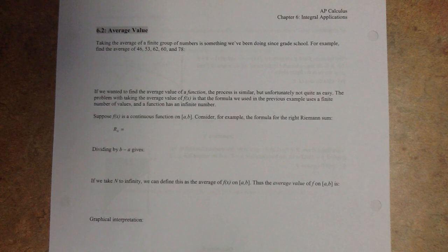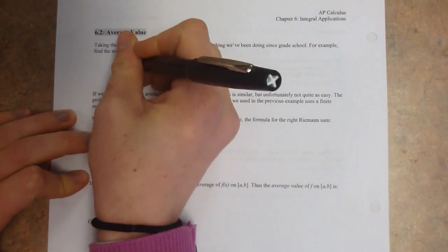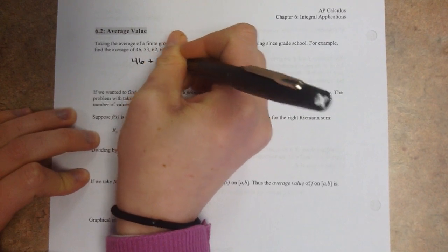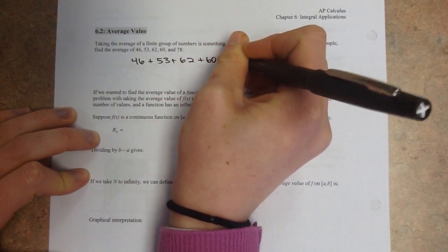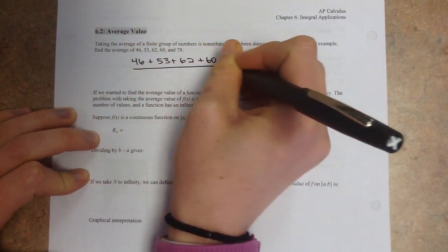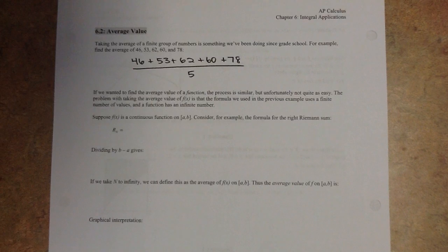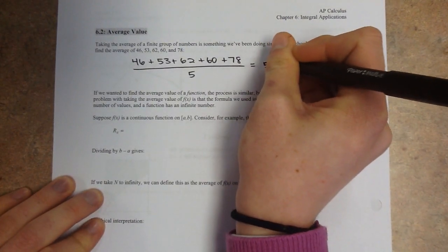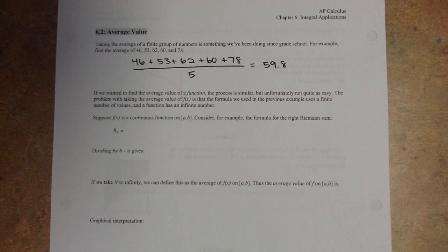Taking the average of a finite group of numbers looks like this — we've got five values, you literally add them all together and divide by how many there are, which is five. When we do that with this example, we end up with 59.8. I'm not going to plug that into my calculator — I'm assuming you believe me.